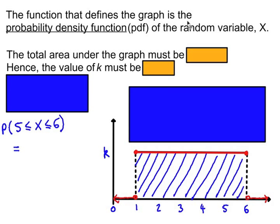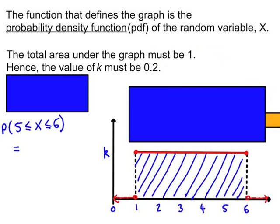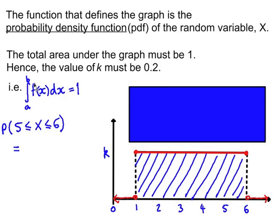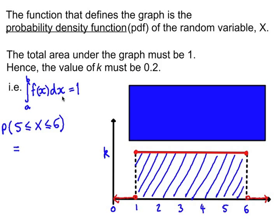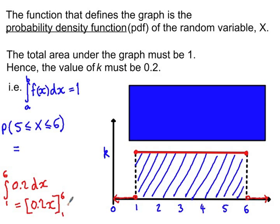The function that defines the graph is the probability density function, or PDF, of the random variable x. Because the total area under the graph must be 1, we can work out the value of k. Using integral notation, the integral from a to b of f(x) with respect to x must equal 1. In this example, a is 1, b is 6, and f(x) is k, which is 0.2. Integrating gives 0.2x; substituting in 6 and 1: 0.2 × 6 = 1.2, subtract 0.2 × 1 = 0.2, giving the required value of 1.